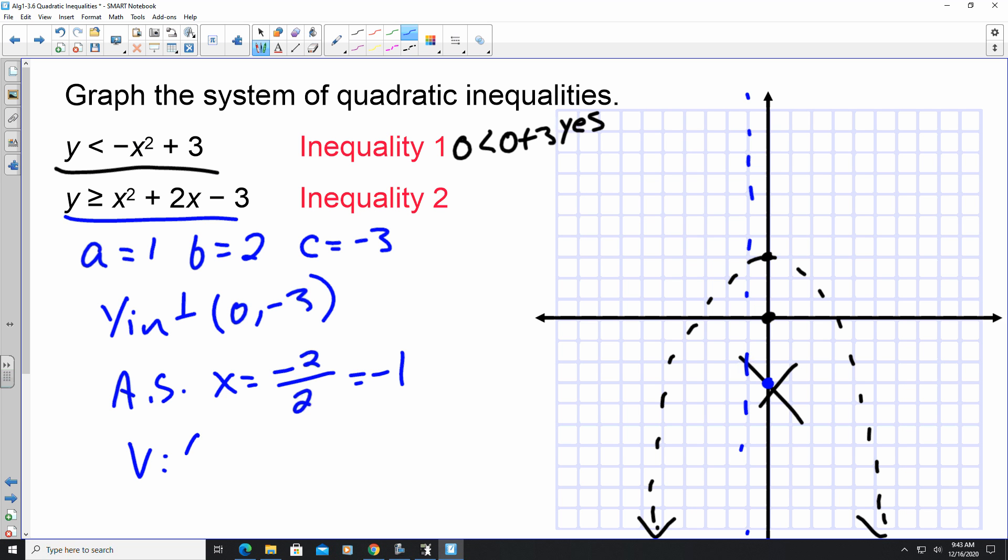My vertex, my x-coordinate is negative 1. My y-coordinate is going to come from negative 1 squared, which is 1, putting it back into the equation. It's going to be minus 2, minus 3. So 1 minus 2 minus 3 is negative 4. And because it's greater than or equal to, this is going to be a solid line.